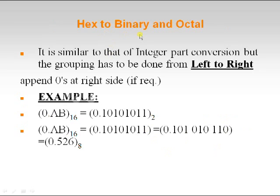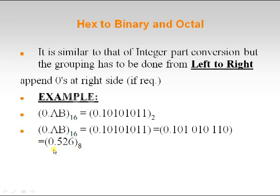Now let us see hexadecimal fractional to binary and hexadecimal to octal. The grouping is done from left to right; append zeros at the right if required. For example, 0.AB in hexadecimal: write the 4-bit equivalent of each hexadecimal digit to get the binary. To convert to octal, represent in 4-bit binary — giving 1010 1011 — then group 3 bits from left to right, appending zeros if required, to get the octal representation.